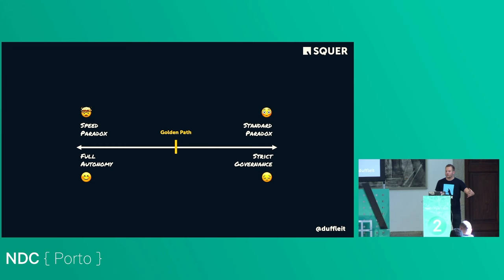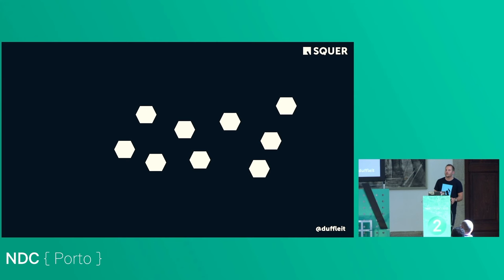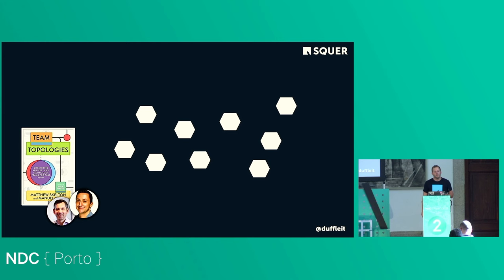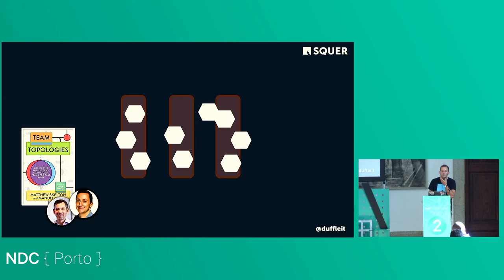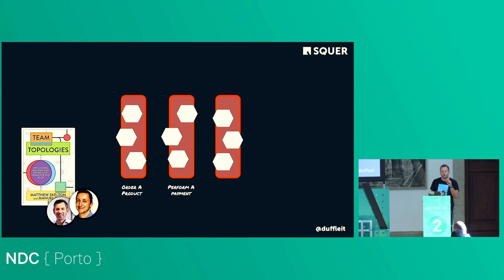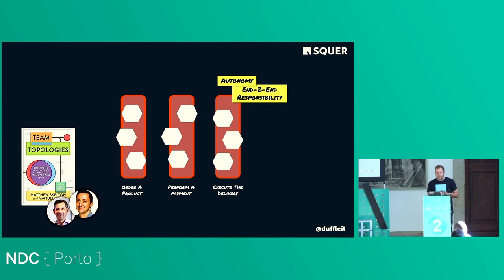We need to find somewhere in the middle — some standards and governance that make us as an organization fast again. Constraints chosen wisely are usually a good thing. We end up with what we call golden paths. The Team Topologies book by Matthew Skelton and Manuel Pais gave us this domain language, with stream-aligned teams responsible for a product or customer journey end-to-end.